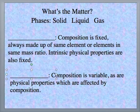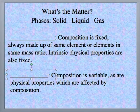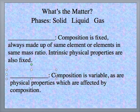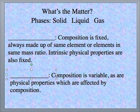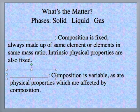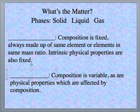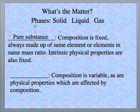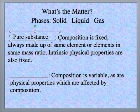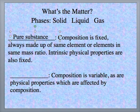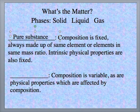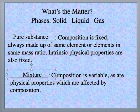So we've talked about matter in the three phases: solid, liquid, and gas. What kind of matter would it be if the composition was fixed? In other words, it was always made up of the same element or elements in the same mass ratio. And the physical properties of this were also fixed. What would you call that? Well, that would be a pure substance.